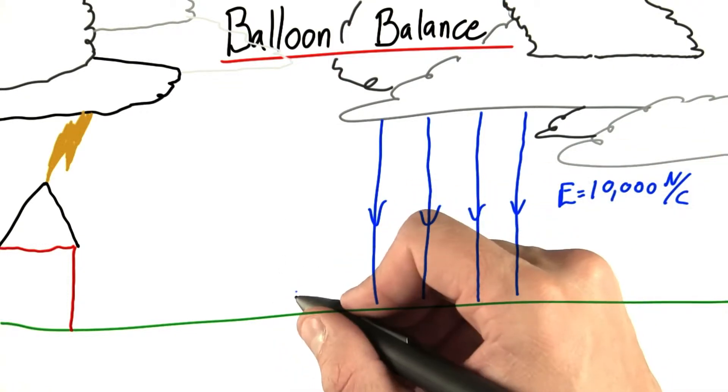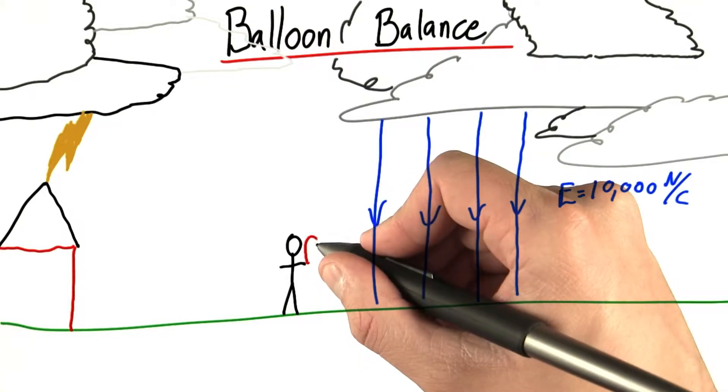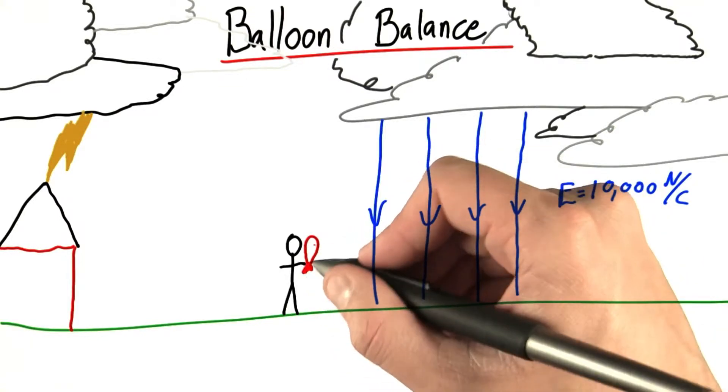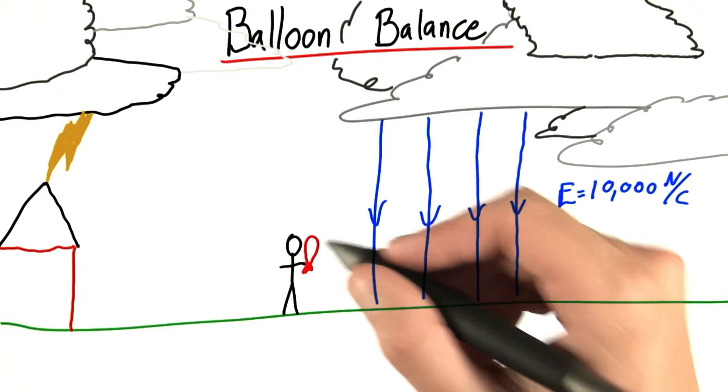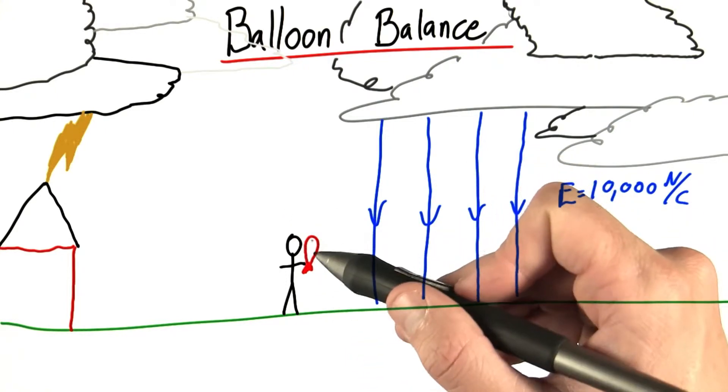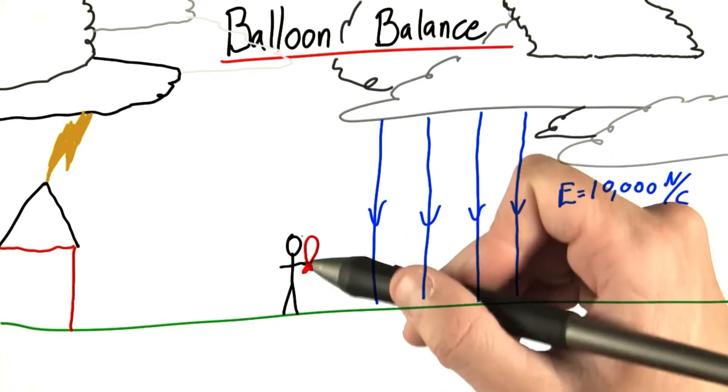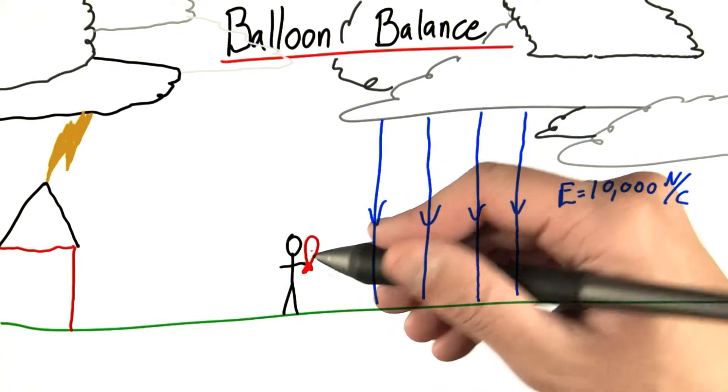Let's say you want to take advantage of this electric field by taking an air-filled balloon that you've recently inflated. That's a balloon, by the way. And rubbing it on your head, because actually, rubbing a balloon on your head causes the rubber of the balloon to strip electrons away from your hair and give the balloon a negative charge.